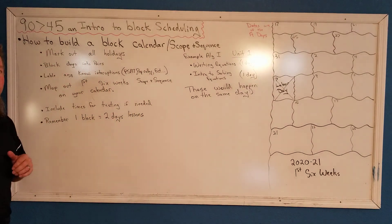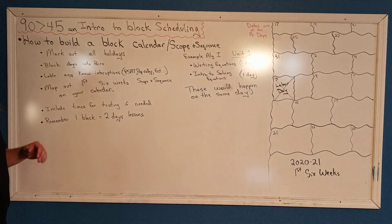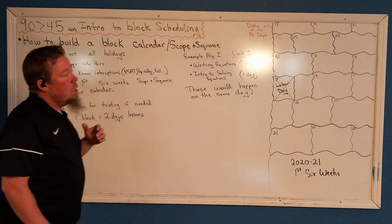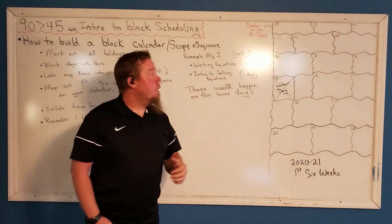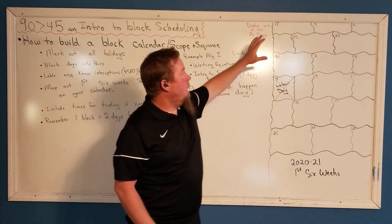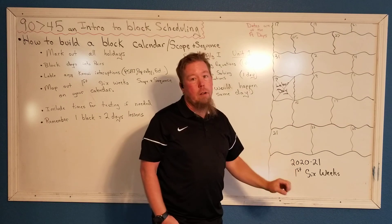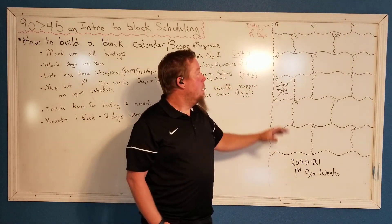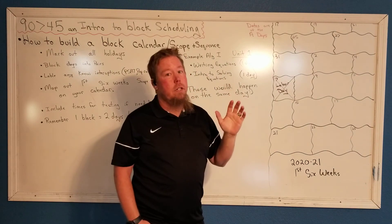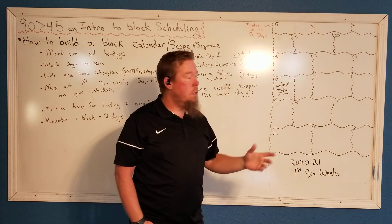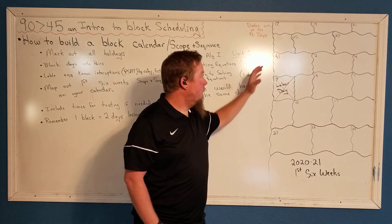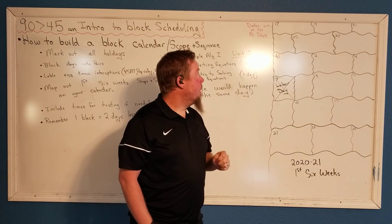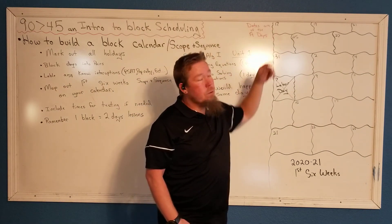We're looking at how to build a block calendar and your scope and sequence. We'll talk about marking out holidays and things like that. First, you want to create a six-week block of time and divide your weeks up. I drew squiggly lines because I can't draw a straight line — it's a little easier on a computer, but for the board today I just drew squiggly lines so I don't get fussed at for not being straight.